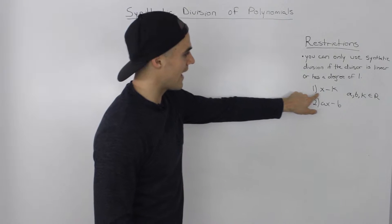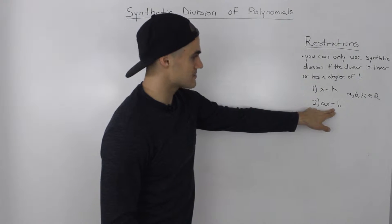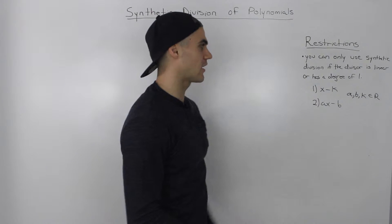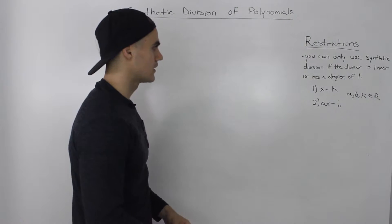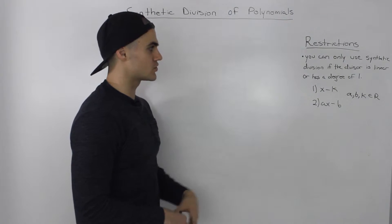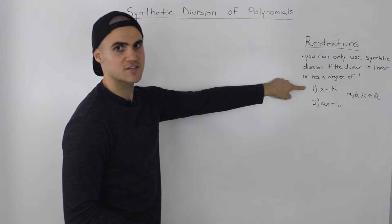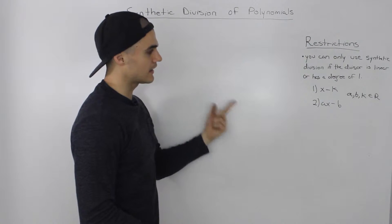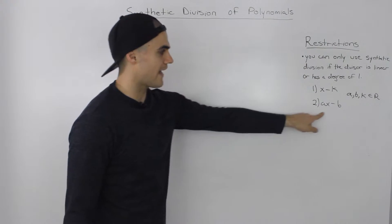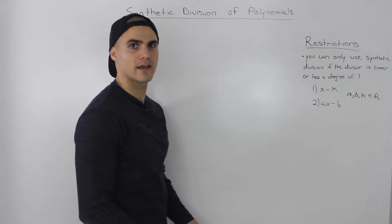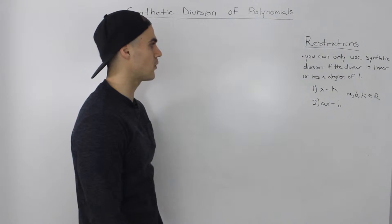It has to be either in the X minus K form or the AX minus B form, where A, B, and K are just any real number. In this particular video, we're just going to go through the first case for now, the X minus K. In future videos, we'll go over the AX minus B case. However, it's a little bit more complex and a lot more steps are required.